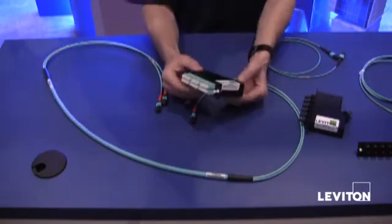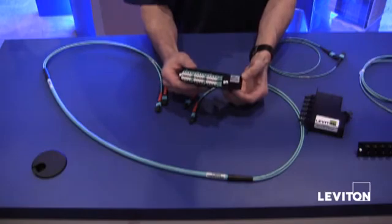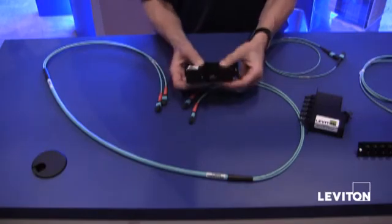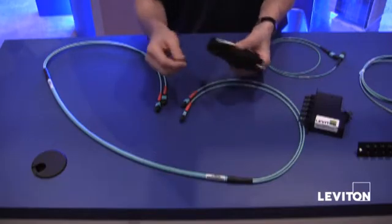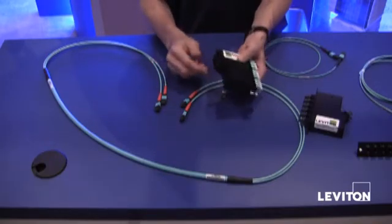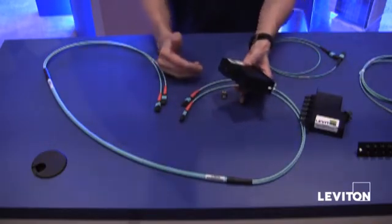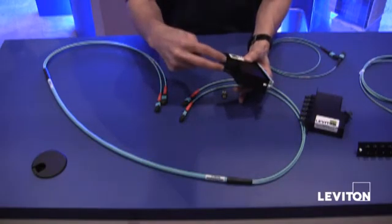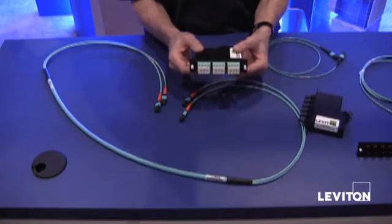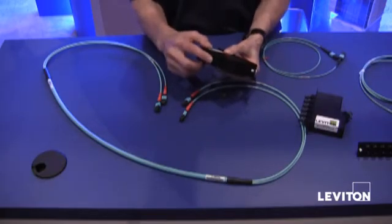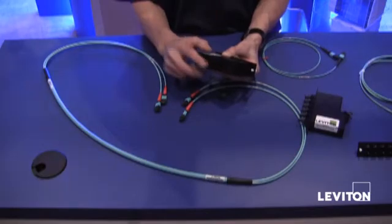Next, you're going to take an MTP to LC cassette. You would install this MTP connector into the back of the module. Today with 12 fiber cabling systems, you would typically have two 12 fiber connectors going into the back of this. So it's basically the same thing that it would look like for an existing 12 fiber system, but instead you're having one connector going into the back instead of two.